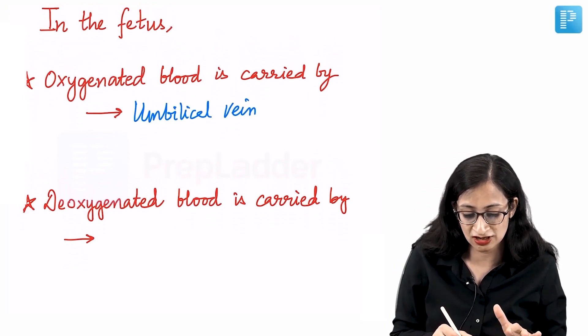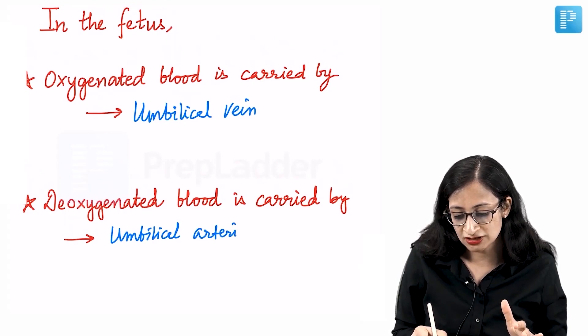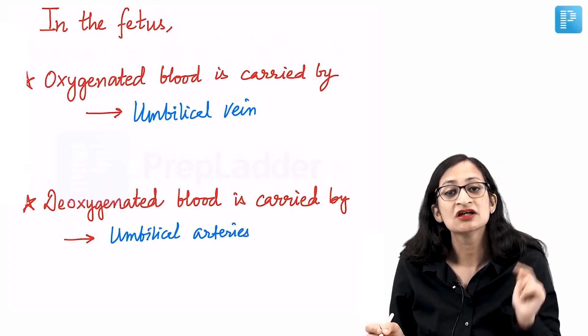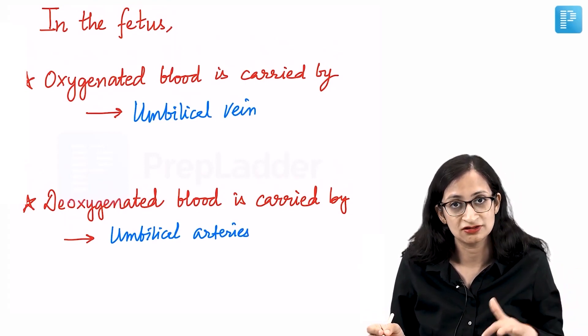Deoxygenated blood is carried by the umbilical artery. Normally there are two umbilical arteries, but if a single umbilical artery is present, there are more chances that the baby has a congenital renal abnormality.